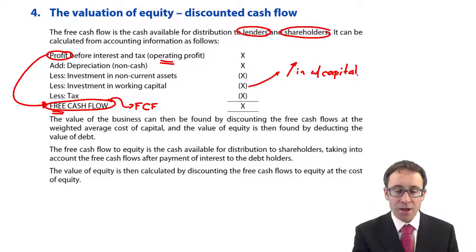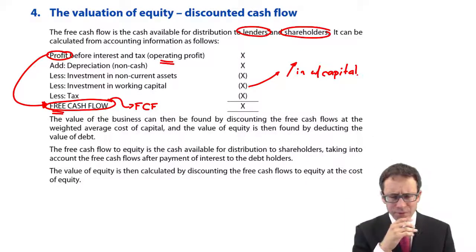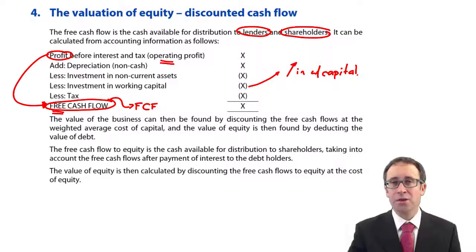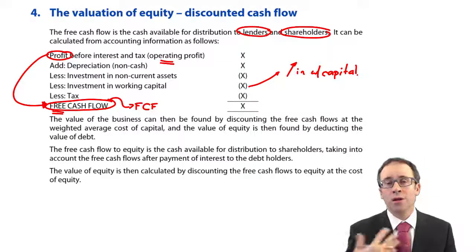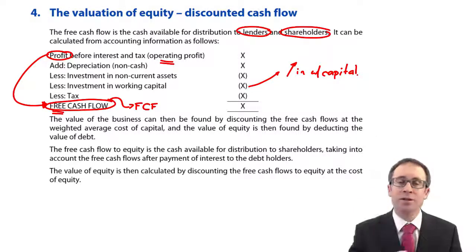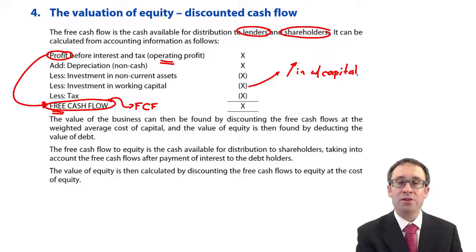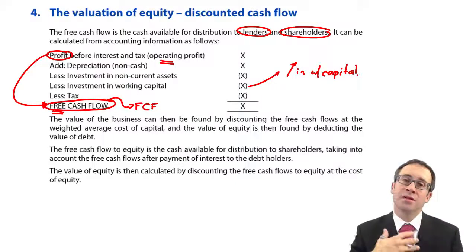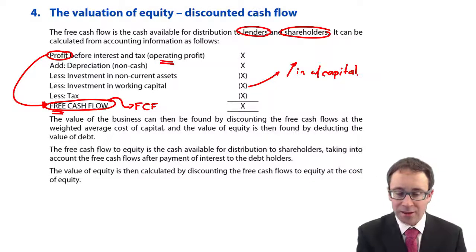After those adjustments, we deduct tax payments. The way we calculate the tax payment is simply to take operating profit and multiply it by the tax rate — there's never anything more complicated than that; you're not expected to do a full tax computation. Just take the profit, multiply by the tax rate, and deduct that cash flow. Once you've made all those adjustments, that gives you your free cash flow — the cash available to debt holders as interest and to shareholders as dividends.